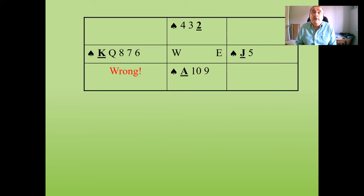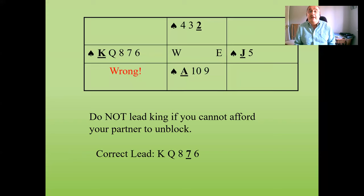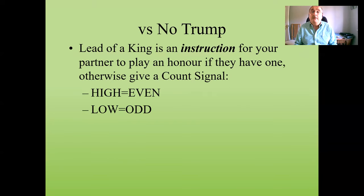Don't lead the king from a two-card sequence like king-queen — that would be a bad mistake against no trump. What would happen is your partner would play the jack, declarer wins the ace, and now declarer gets another trick because they've got the ten-nine left. The right card to lead there is the fourth highest — your partner will play the jack, force out the ace, and when you get in you'll take the remaining tricks.